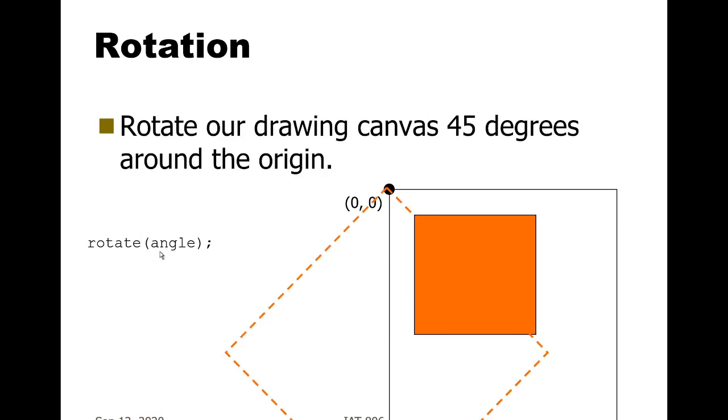Next, we would issue the call rotate by angle. Rotate is expecting radians. What that does is it rotates the coordinate system by 45 degrees clockwise. As you can see, I've just shown in orange dashed lines what the new coordinate system looks like.